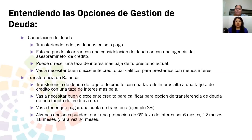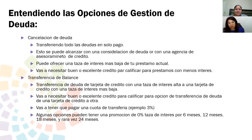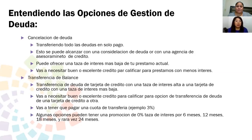Para la transferencia de balance también vas a necesitar buen o excelente crédito. Vas a tener que pagar una cuota de transferencia — por ejemplo eso puede ser 3%. Si tienes una deuda de $3,000, transferir todas esas tarjetas a una sola te costaría $90. Cuando vayas a tomar esta transferencia de balance, toma en cuenta que estés aprovechando promociones que ofrezcan cero tasa de interés por 6 meses, 12 meses, 18 meses, o rara vez 24 meses. También hay otras tarjetas que ofrecen no cobrarte el 3% por transferir esa deuda — son pocas, pero sí las puedes encontrar en línea.